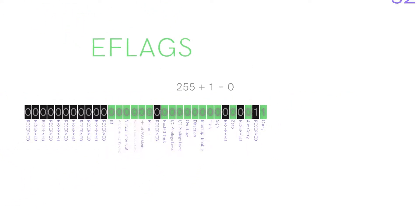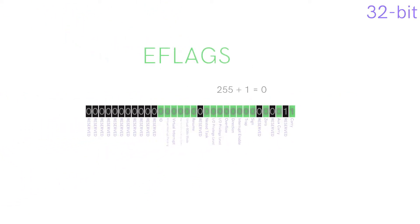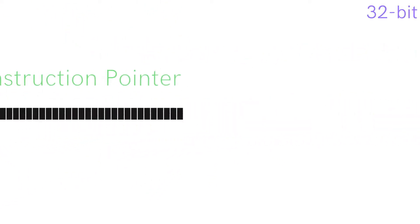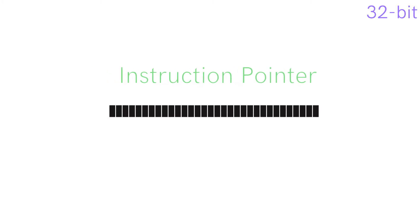The instruction pointer, or EIP, is a read-only register containing a pointer to the current instruction. This cannot be changed directly, but instructions like JMP will change it.